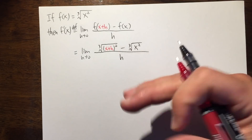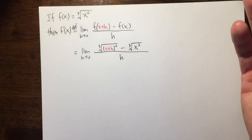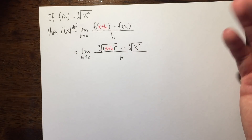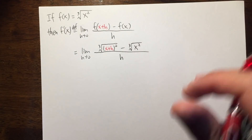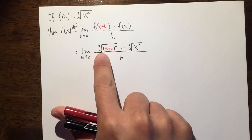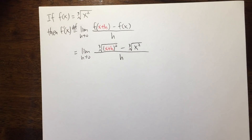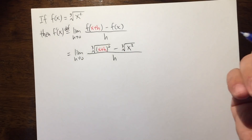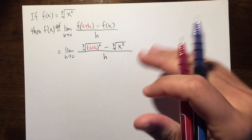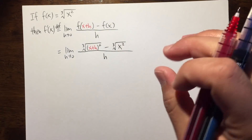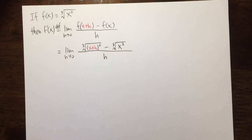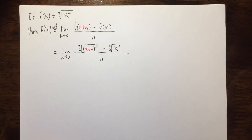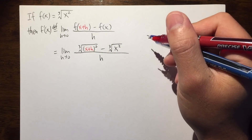Last time, when I showed you guys the square root example, we used the conjugate. So now the question is, can we also have a conjugate for the cube root? And the answer to that is, of course, yes. Otherwise, I wouldn't be able to show you guys this right here. And with that, we have to recall how to factor the difference of two cubes. So let me write this down for you guys on the side.